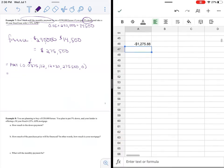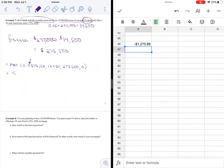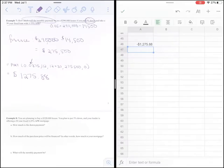So let's see, it looks like my monthly payment will be one thousand two hundred and seventy five dollars and eighty eight cents.